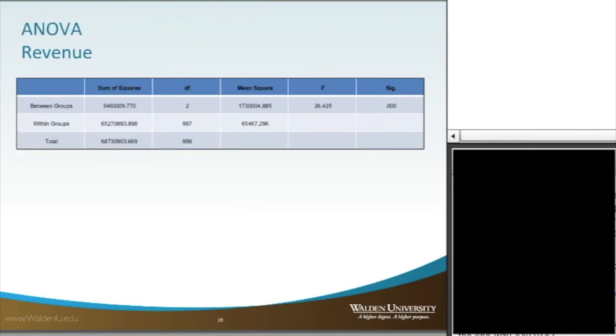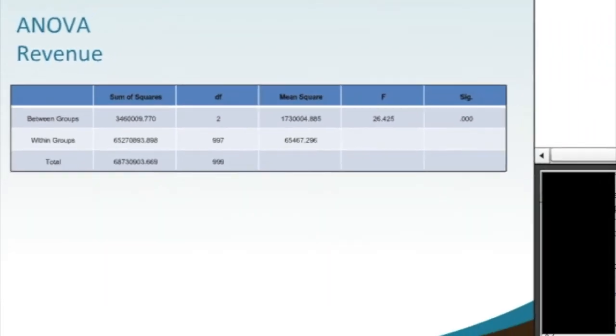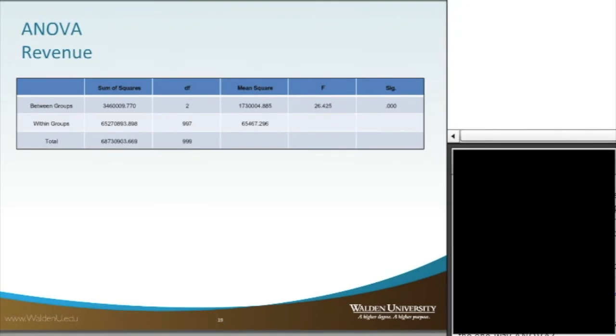The next test table we get is actually the ANOVA table, and we get the sum of squares for between groups and within groups. We can look at between groups, because that's what we're interested in. We actually get the F value, and we can see that it is significant, that there's a significant result to the ANOVA, meaning that all groups are not equal. The group means are not equal, and so we're going to reject the null hypothesis that the group means are equal.